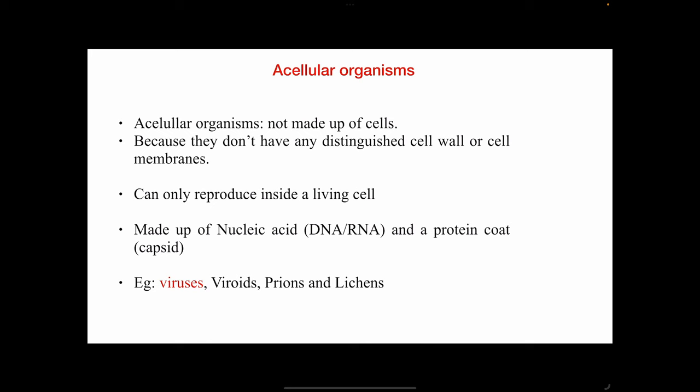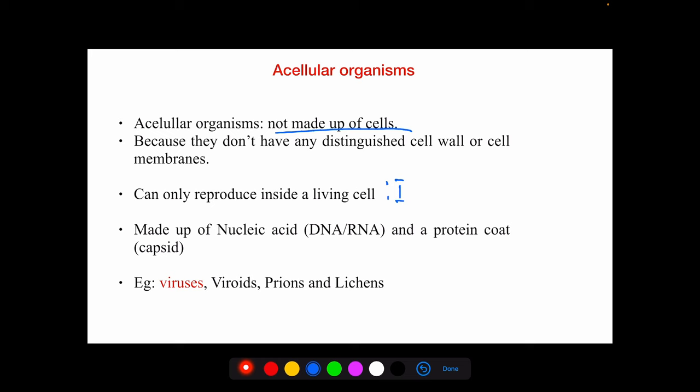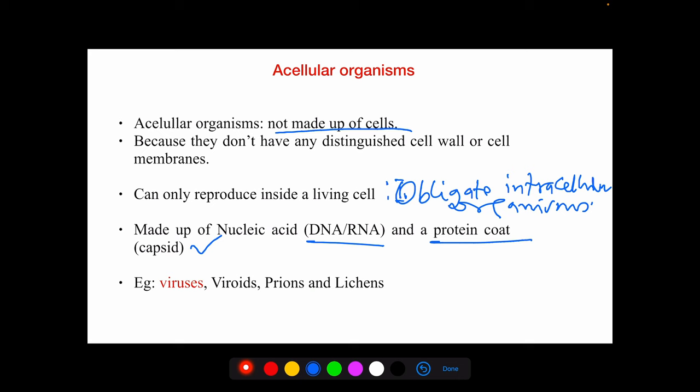Acellular microorganisms are not made up of cells. Because they have no distinct cell wall or cell membrane, they are considered non-living — obligate intracellular organisms that can only reproduce inside a living cell. They are made up of nucleic acids — either DNA or RNA — and have a protein coat called a capsid. Examples include viruses, viroids, prions, and virusoids.